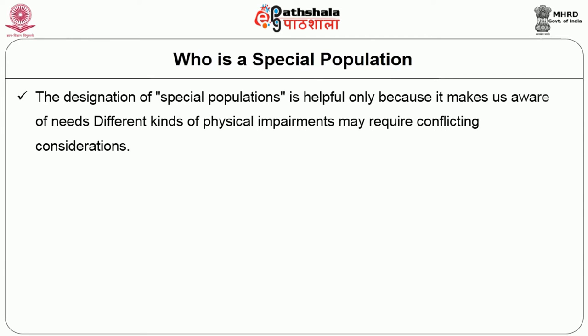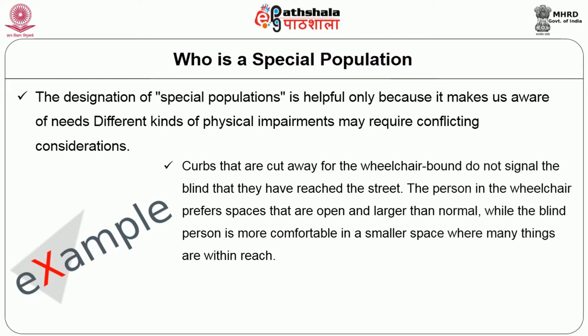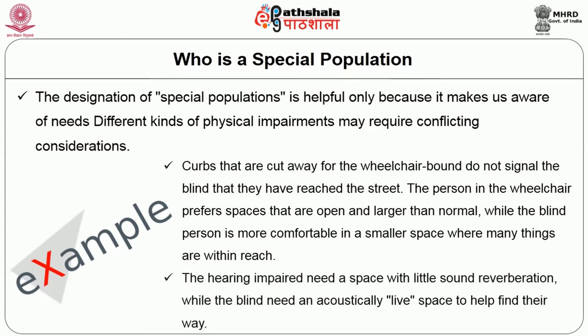The designation of special population is helpful only because it makes us aware of needs. Different kinds of physical impairments may require conflicting considerations. For example, curbs that are cut away for the wheelchair-bound do not signal the blind that they have reached the street. The person in the wheelchair prefers spaces that are open and larger than normal, while the blind person is more comfortable in a smaller space where many things are within reach. The hearing impaired needs a space with little sound reverberation, while the blind needs an acoustically live space to help them find their way.